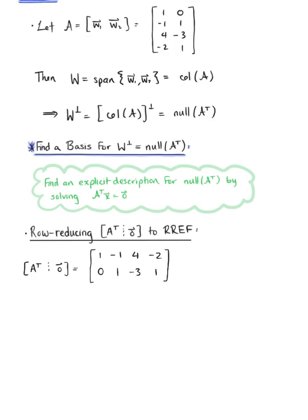And we're almost at row reduced echelon form. We can take our second pivot and use that to eliminate the entry above it by adding the second row to the first row.